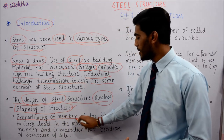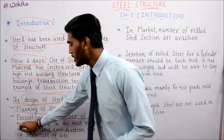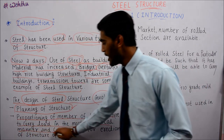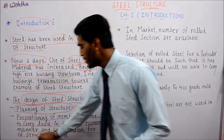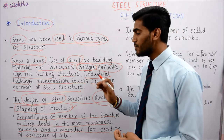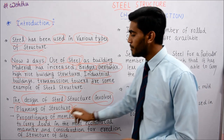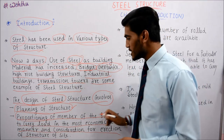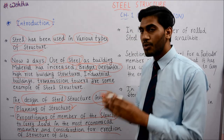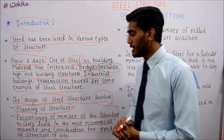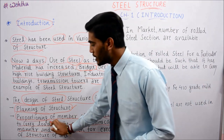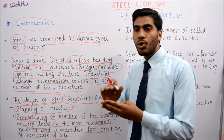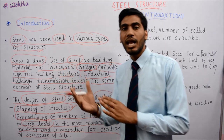The second point is Proportioning of the members of the structure to carry load in the most economical manner, and consideration for erection of structure on site. So we proportion the members of the steel structure - keep them in ratio - so that the load they carry is done in the most economical way, minimizing cost.